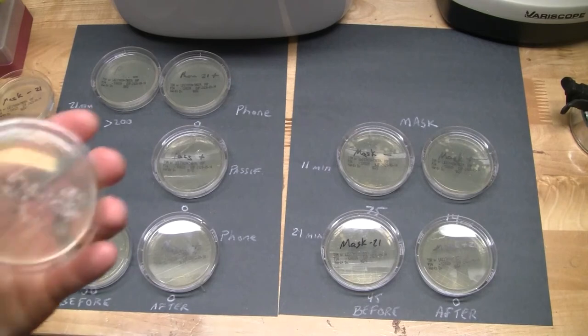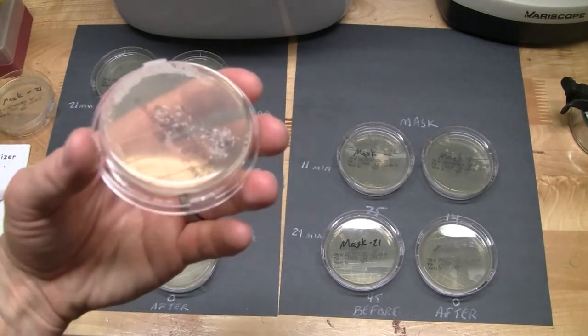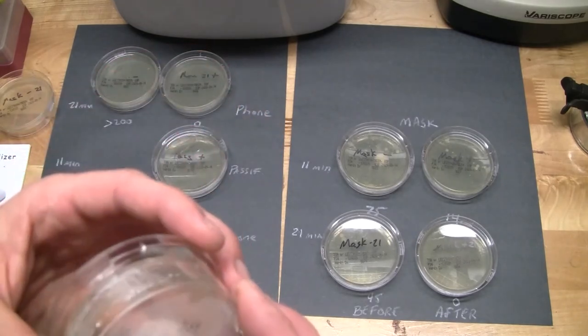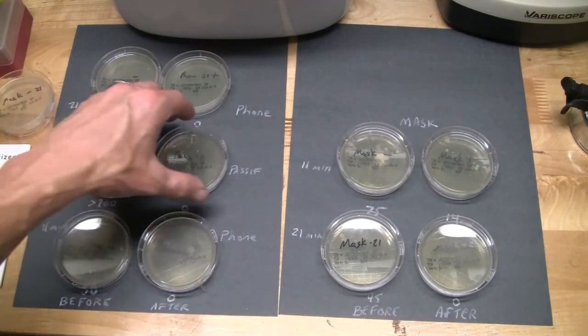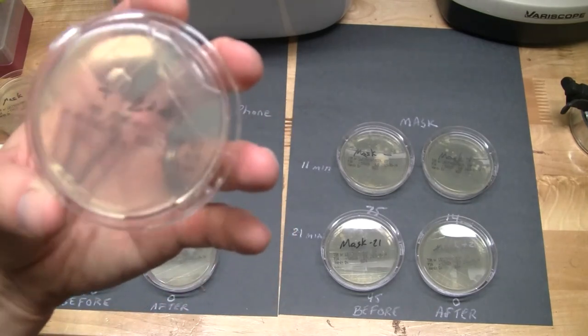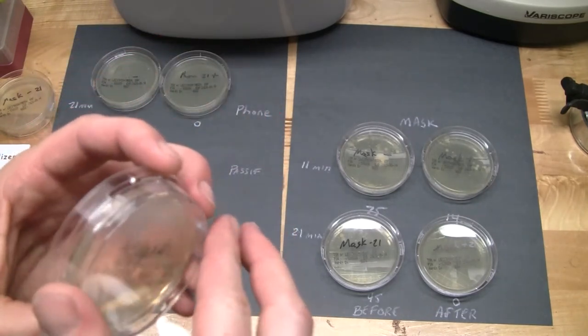The pacifier, over 200 colonies here getting into the too numerous to count range, so you can see a lot of nasty growth there. And 11 minutes in the sterilizer took care of that. There were no colonies on the sterilized plate.